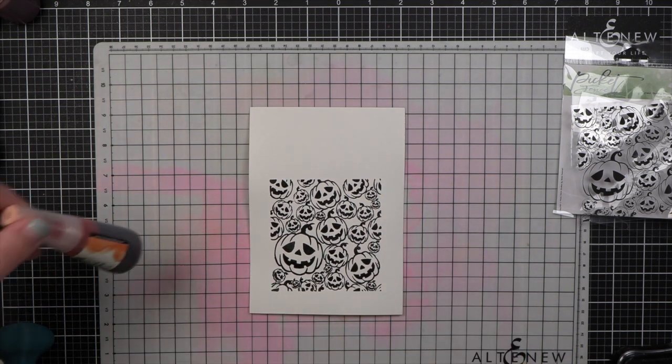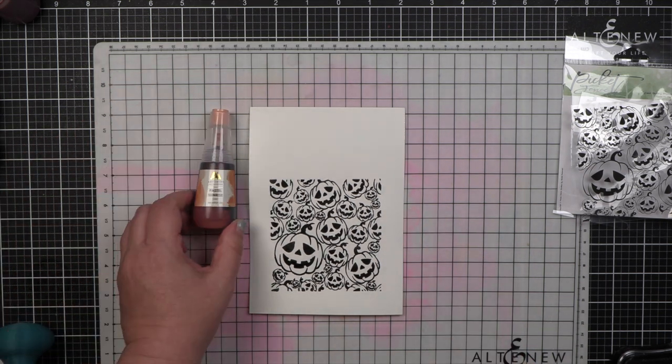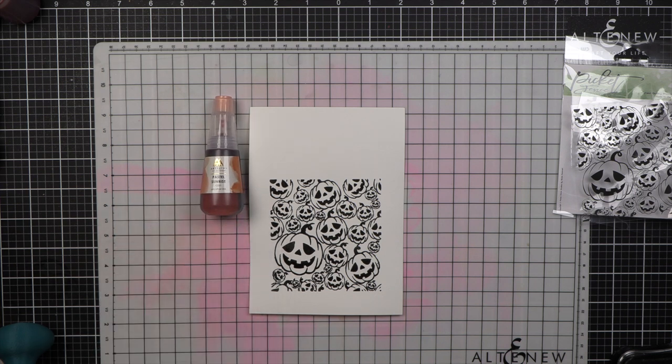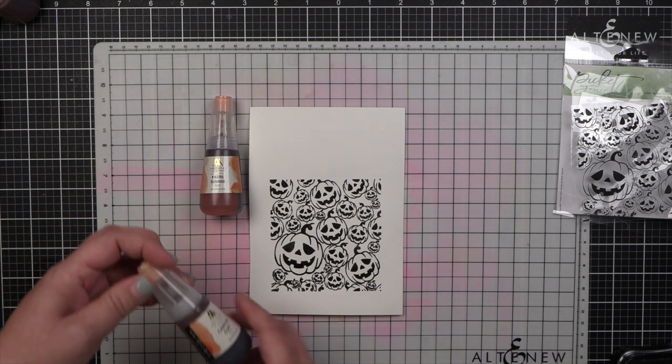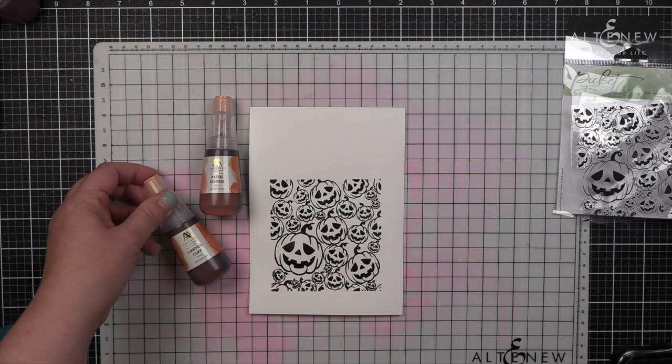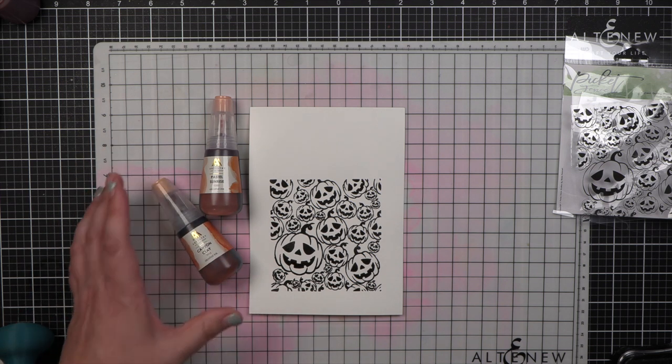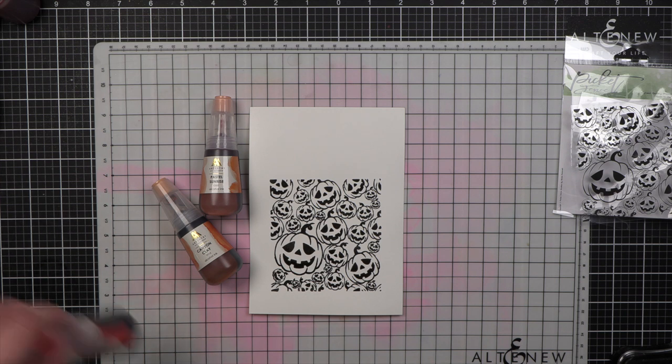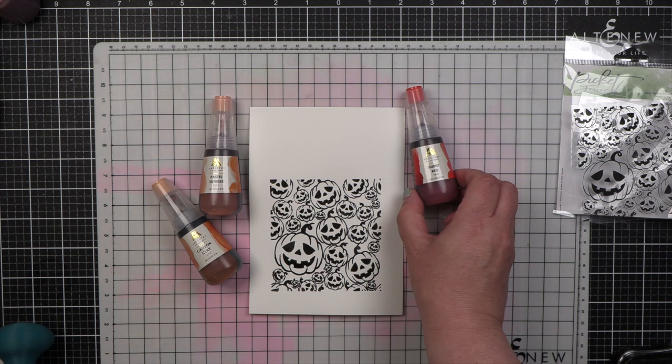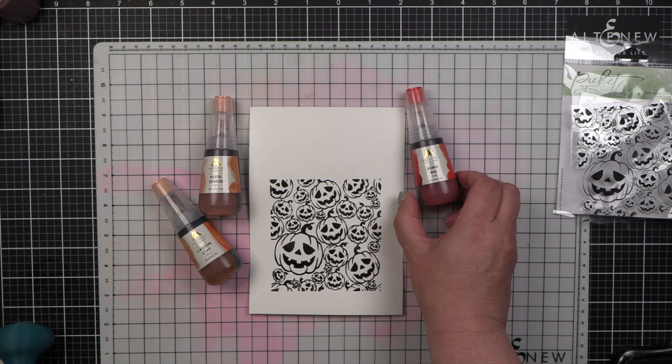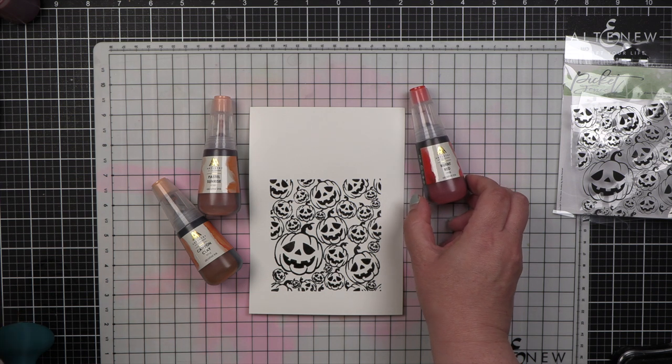I did it because I wanted to add some alcohol ink, and I'm using the alcohol ink from Altenew in the Martian Terrain Collection. So you can see I have Pastel Sunrise, Canyon Clay, Burnt Red, and I also am adding in a little bit of Fresh Lemon.